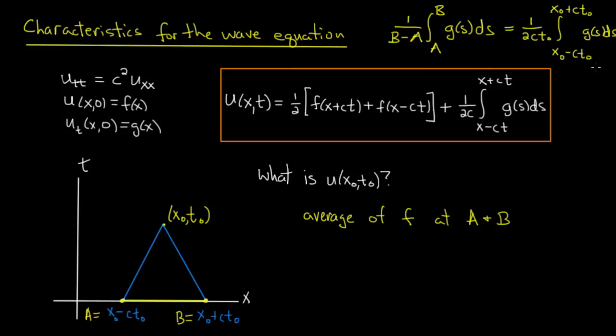And remember, this is the average value. So what is u(t)? Well, it's the average of f at a and b plus t0 times the average of g between a and b.